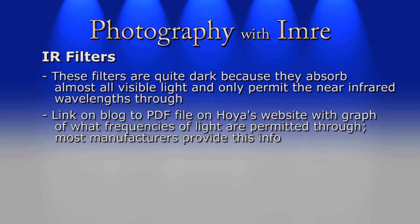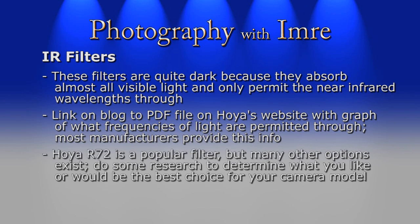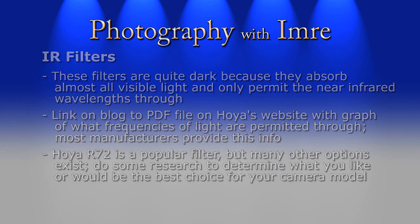I have a link on my blog that points to a PDF file on Hoya's website showing a graph of what frequencies of light are permitted through. The Hoya R72 is a very popular filter for infrared photography as it's reasonably priced and works well with most unmodified digital cameras, but there are many choices out there and I recommend you do some research. Some links I've added to my blog point to other filters you can consider, so feel free to check it out.